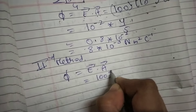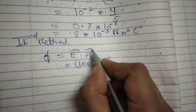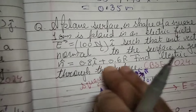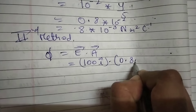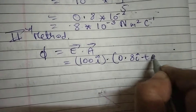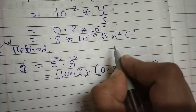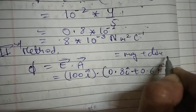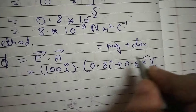Now let's see the second method — without theta. Flux equals E dot A. E is 100i. The area A is a vector, meaning it has magnitude and direction. Its direction is given by the unit vector n-hat, which is 0.8i plus 0.6k.